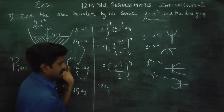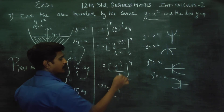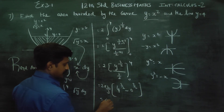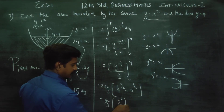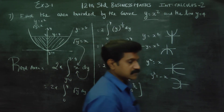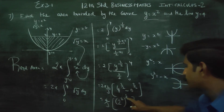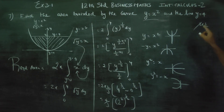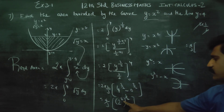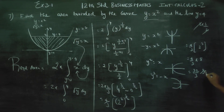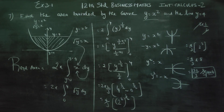Upper limit minus lower limit: upper limit is 4 power 3 by 2, lower limit is 0 power 3 by 2. 4 can be written as 2 square. Multiplying the powers: 2 into 3 by 2 gives 2 power 3, which is 8. So the result is 4 by 3 into 8, which is 32 by 3 square units.